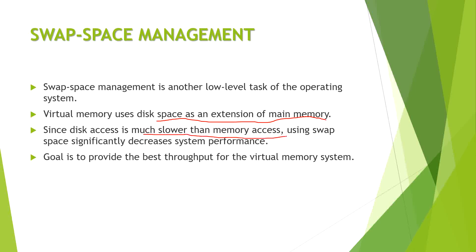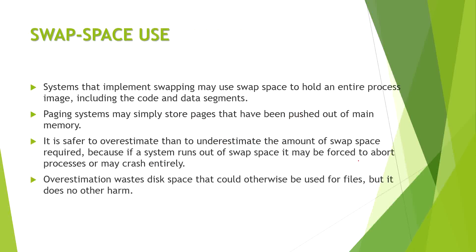Since disk access is much slower than memory access — because disks are external to the CPU — using swap space significantly decreases system performance. Different caching techniques, such as secondary and primary caches, are used as data banks to import data quickly. The goal is to provide the best throughput for the virtual memory system.